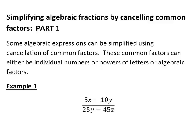This recording is the first in a two-part series on simplifying algebraic fractions by cancelling common factors. Some algebraic expressions can be simplified if they have common factors on the numerator and the denominator that can be cancelled. These common factors can be individual numbers, powers of letters, or algebraic factors. In this first part we are going to consider factors that are individual numbers or powers of individual letters.